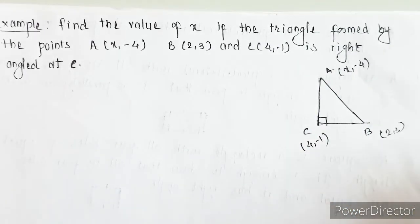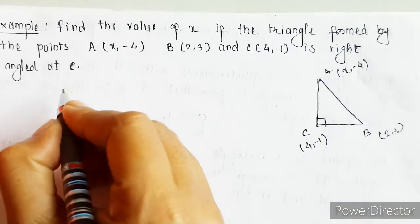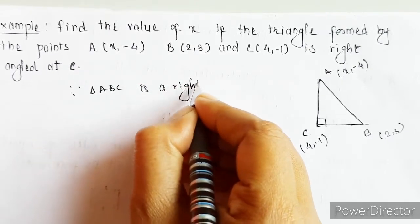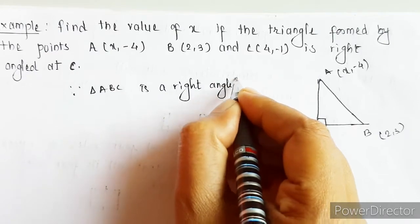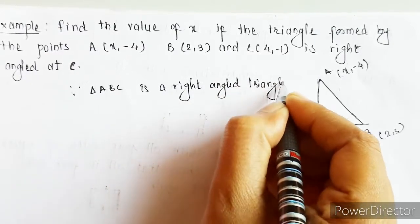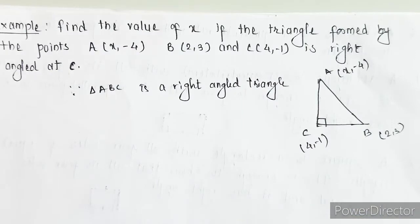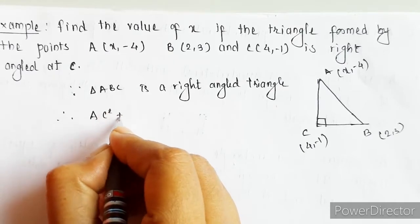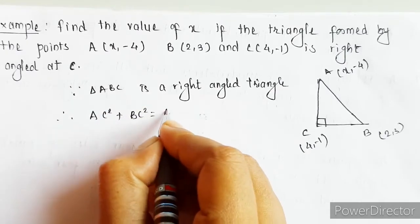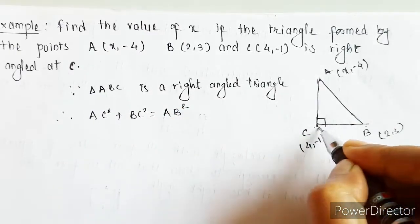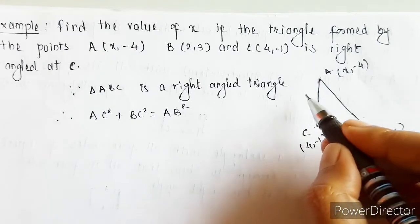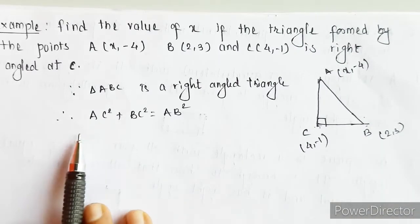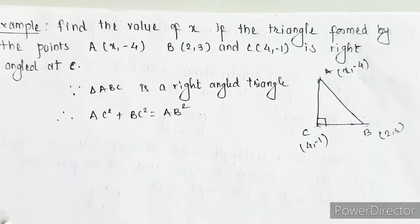We know that it is a right angle triangle. Since triangle ABC is a right angle triangle, we know that it satisfies the Pythagoras theorem. That is, in this case, AC² + BC² = AB². The square of the two sides equals the square of the hypotenuse.